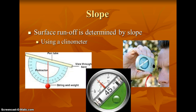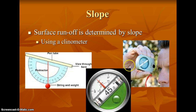Slope determines how quickly water runs off the land. We use a clinometer. You can make one using a hollow pen tube attached to a protractor with a string and a weight. You look through the empty pen tube and read the angle off the protractor. You can also use a compass, which works the same way.